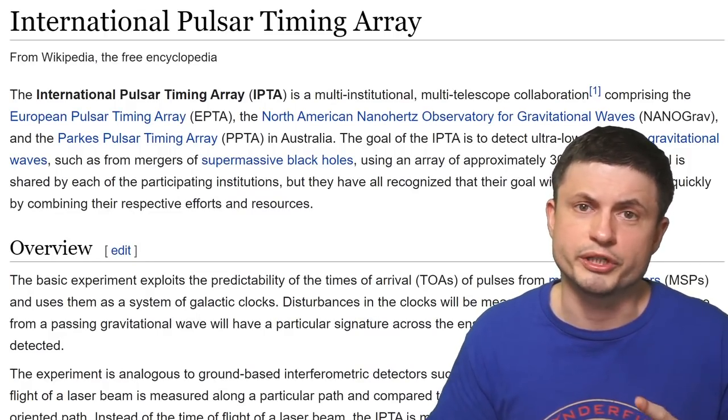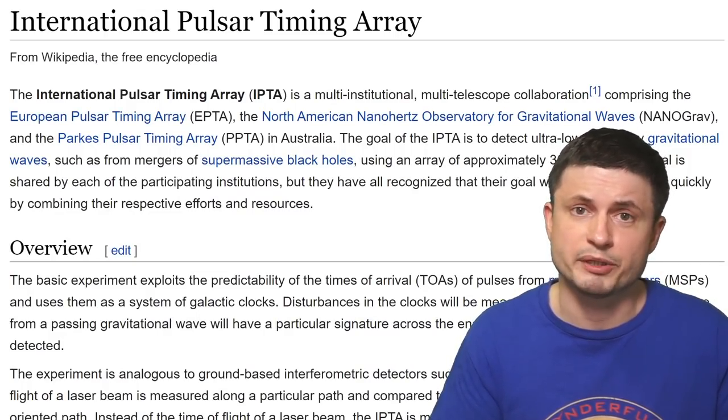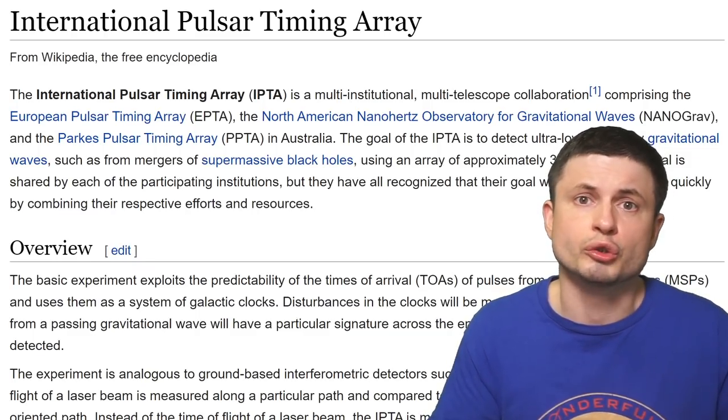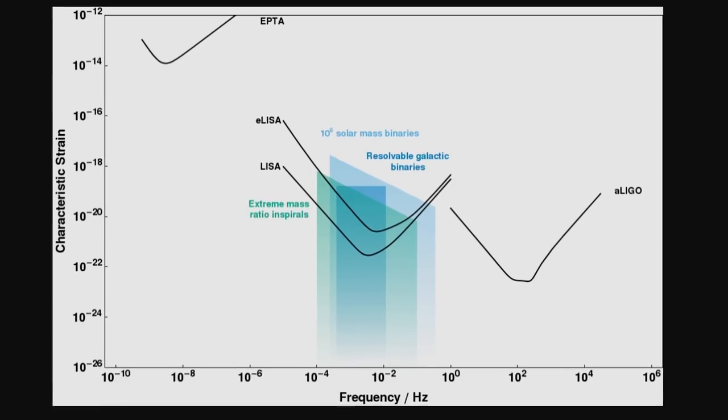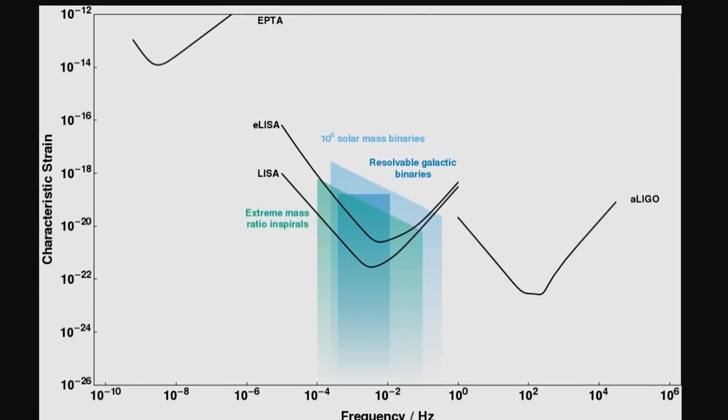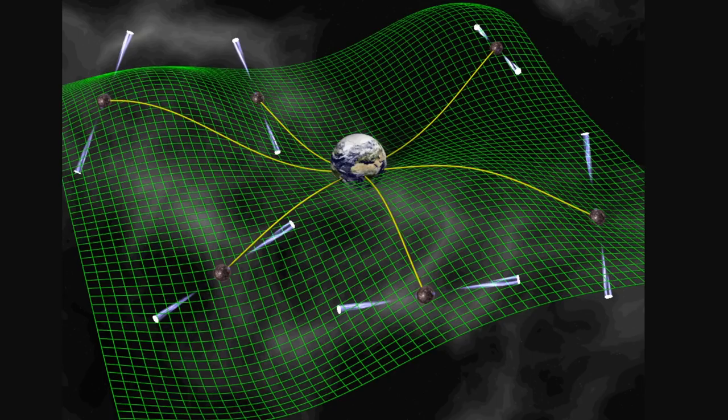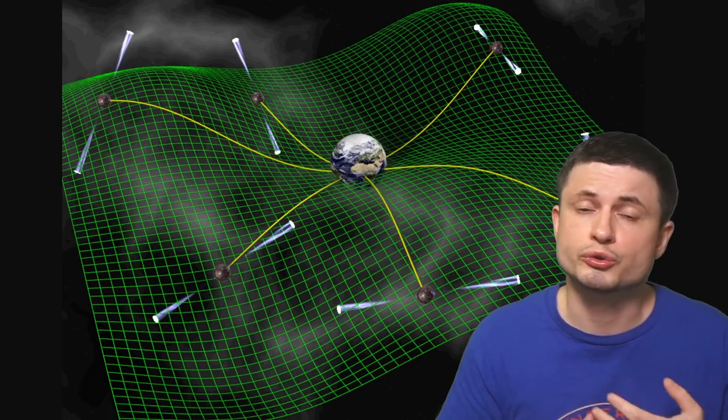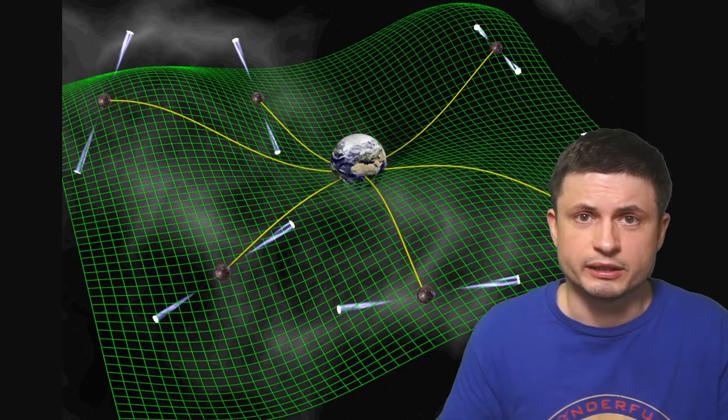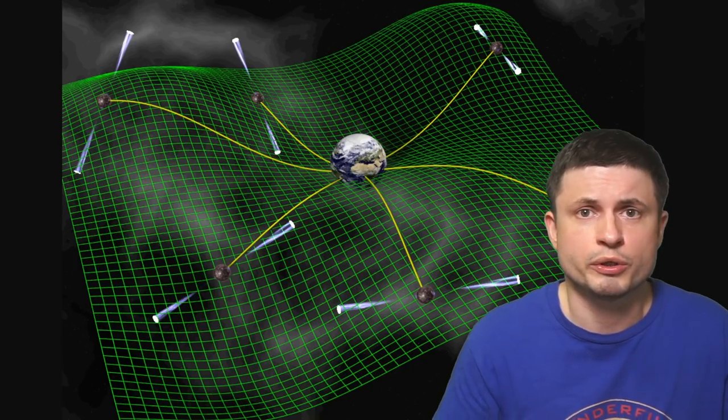But on top of this, there's at least one other collaboration using an entirely different technique known as the pulsar timing array that can also in theory detect even longer wavelengths. In this case, covering objects that are billions or even trillions masses of the Sun. And these types of pulsar timing arrays rely on various detections coming from various pulsars detected in our galaxy. And by observing minute differences in these pulsations, it becomes possible to measure extremely long wavelengths of gravitational waves. There's actually a much better explanation in one of the previous videos, somewhere right there, or in the description below.